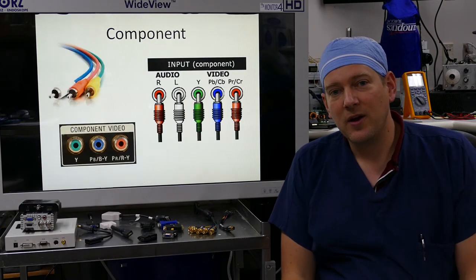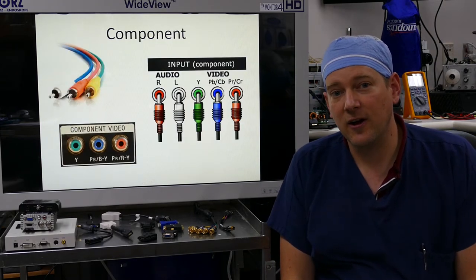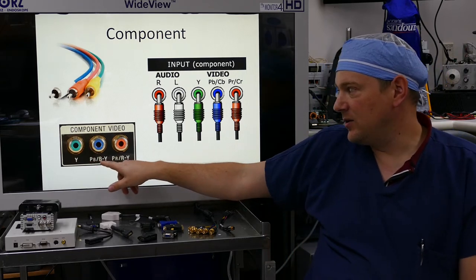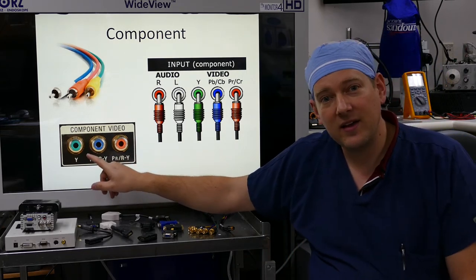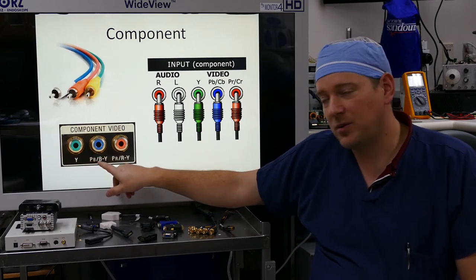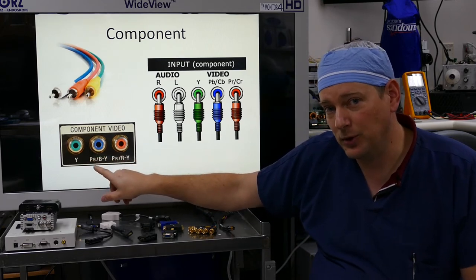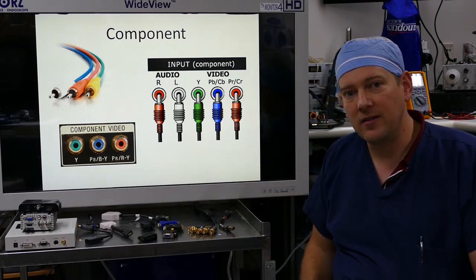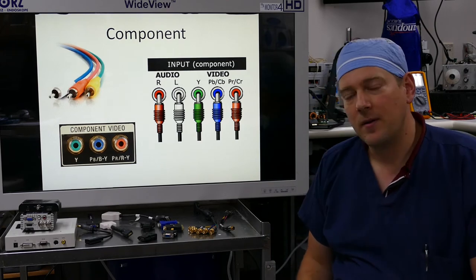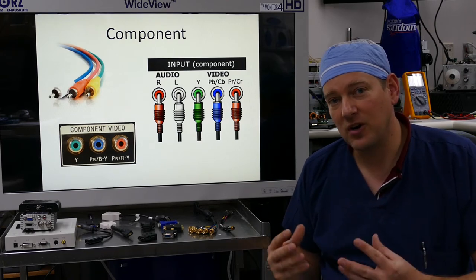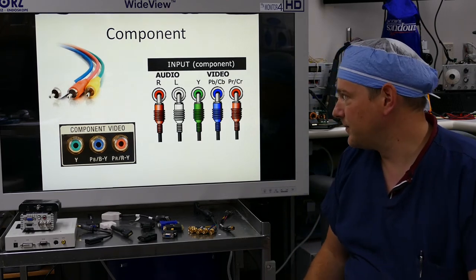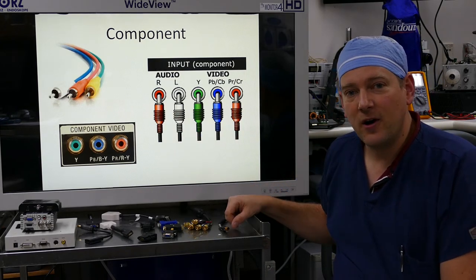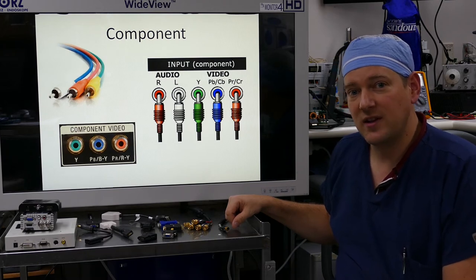Component video. Component is the first high-definition analog video signal. Component is Y, PB, and PR. Y is chrominance, it's a black and white image, then it separates out PB which is your blue color band and PR which is your red color band. The device itself mixes those to create your image. By separating them out, you can have a sharper image at the destination. Component video also has to have a separate audio channel. Often you'll have a 5RCA cable running between the source and the destination.